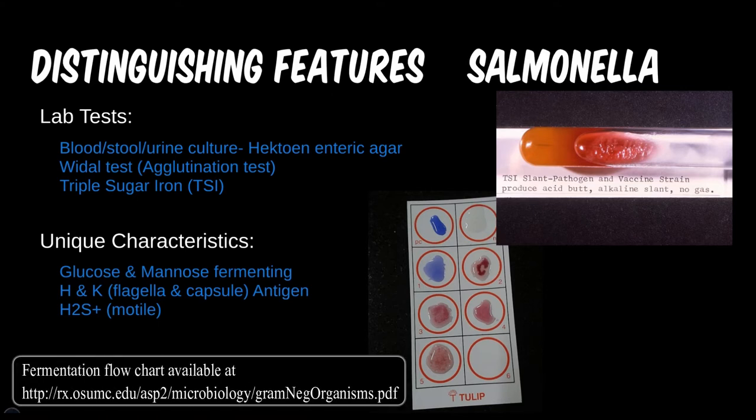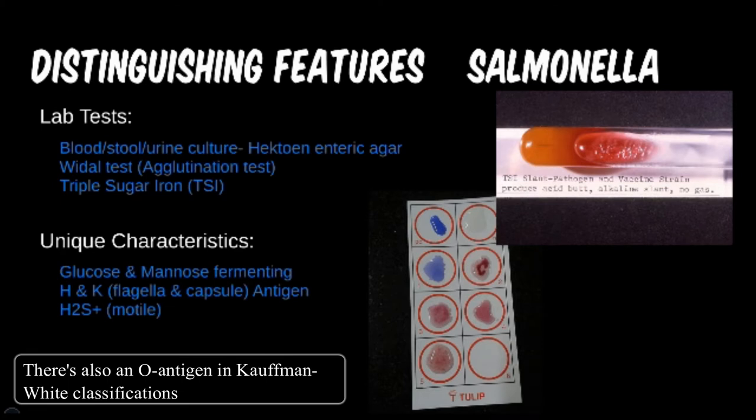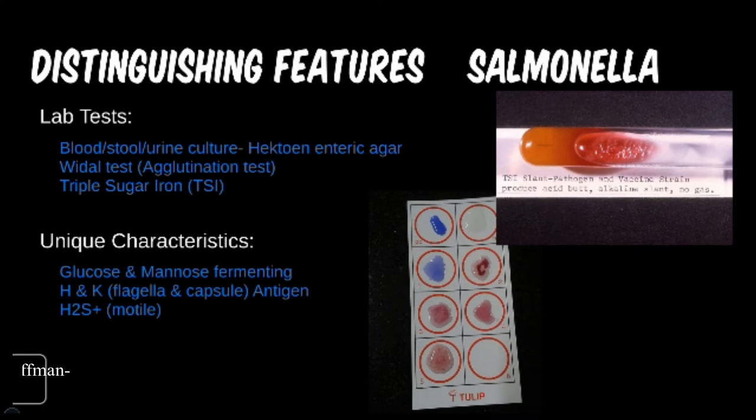The common sugars that we may test for are glucose, lactose, sucrose, and mannose, along with a few others. Salmonella also possesses the H antigen and K antigen, as well as produces hydrogen sulfide from sugar fermentation, which is seen on TSI testing.